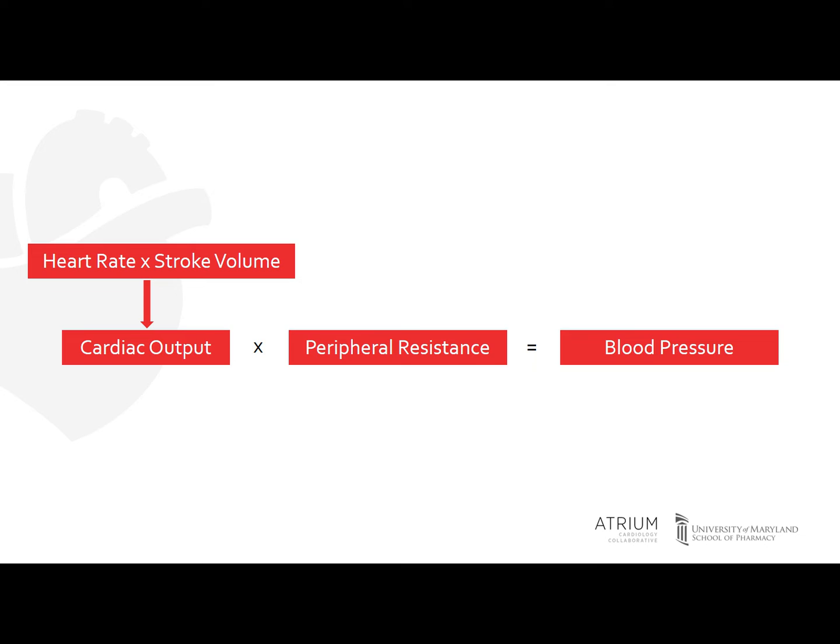Blood pressure is determined by cardiac output times peripheral resistance. If you see an increase in peripheral resistance, which is often caused by vasoconstriction, this can lead to an increase in blood pressure. Having an increase in cardiac output will directly increase your blood pressure.